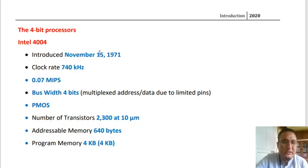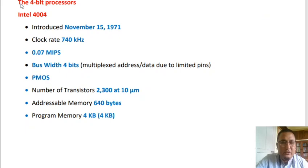The first microprocessor we're going to discuss is the Intel 4004. It is a 4-bit microprocessor introduced on November 15, 1971. It had a clock rate of 740 kHz and a capability of 0.07 million instructions per second. The width of the bus was 4 bits, and it was multiplexed in order to limit the number of pins. It was based on P-type metal oxide semiconductor technology and had 2,300 transistors at 10 micrometers.